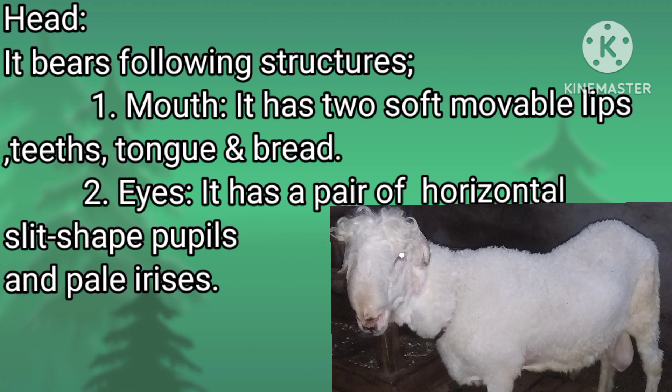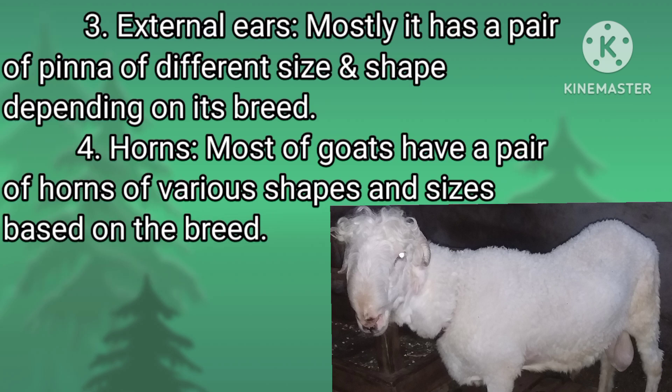Eyes: it has a pair of horizontal slit-shaped pupils and pale irises. External ear: it has a pair of pinnae of different size and shape based on its breed.